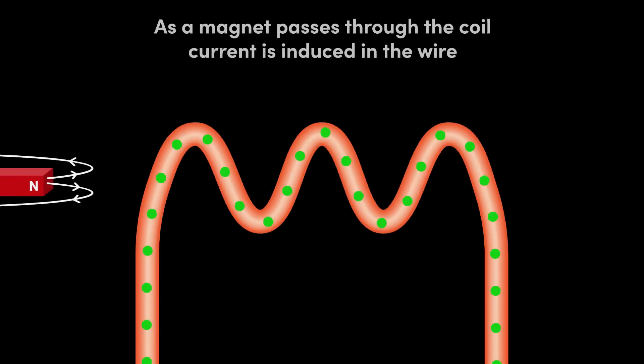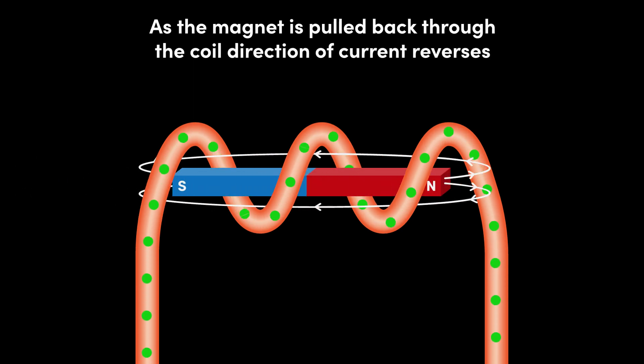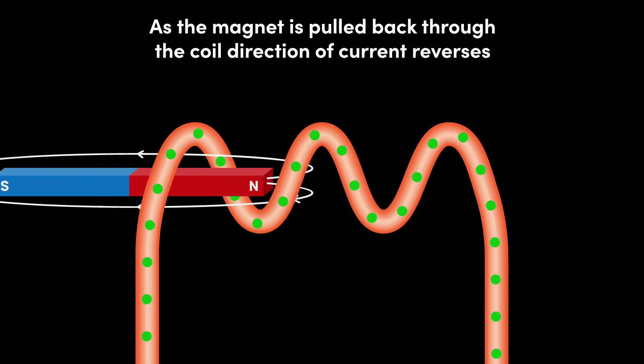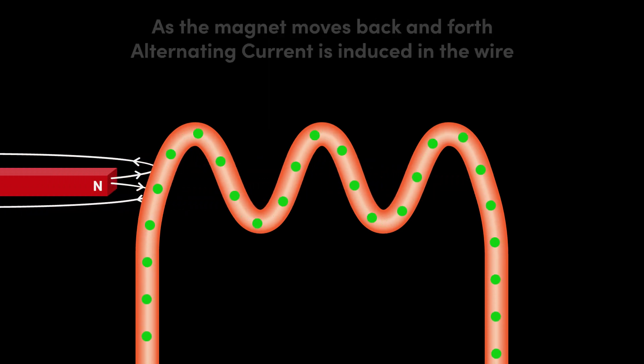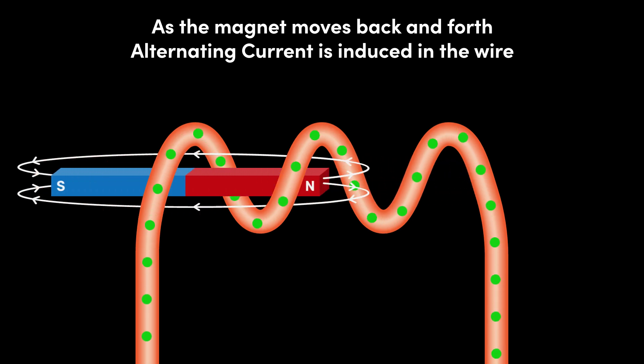If we pass a magnet through the coil, current is generated or induced in the wire. If we pull a magnet back through the coil, the direction of current reverses. If we move the magnet back and forth repeatedly like this, we can induce an alternating current.